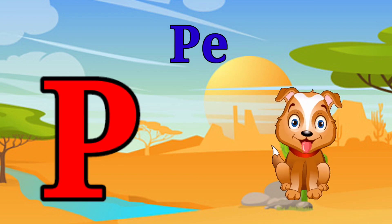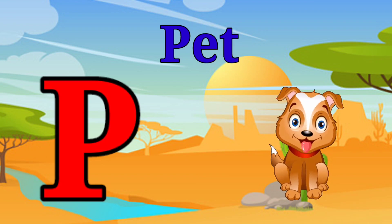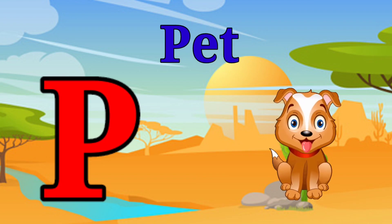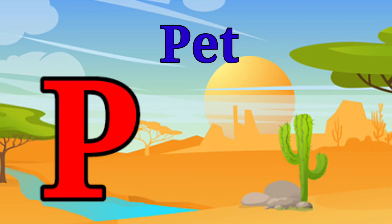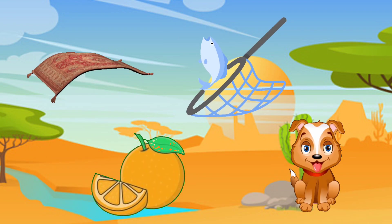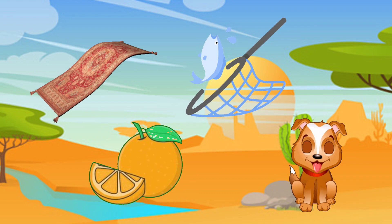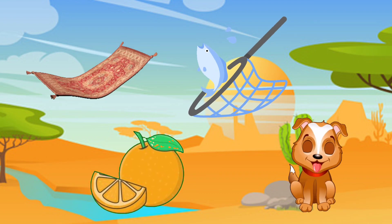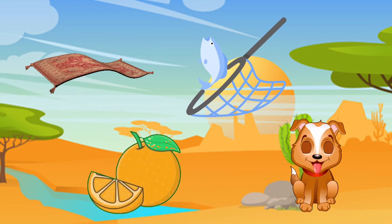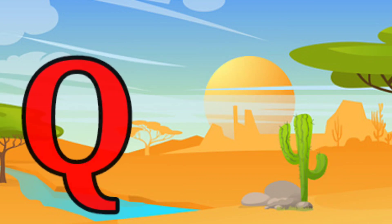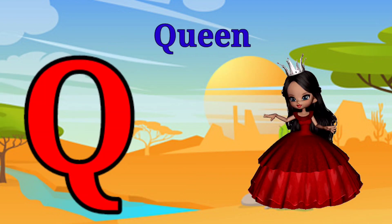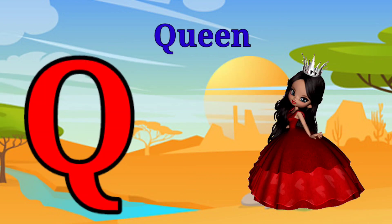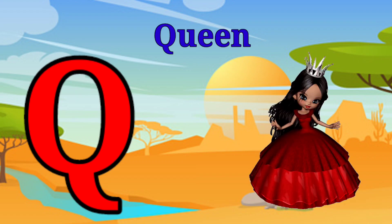P is for pet, p-p-pet. Q is for queen, qu-qu-queen.